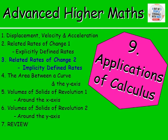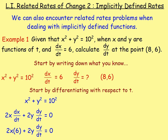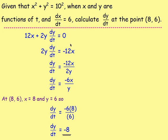We then went on to look at implicitly defined rates. This means the equation won't be y equals something in terms of x — you've got x's and y's on the same side. In that case, you differentiate with respect to t. Write down the information you have, then differentiate: bring the power down, take one off, and because you're differentiating with respect to t, you get dx/dt or dy/dt beside each term. Differentiating a constant like 10 squared just gives zero. Sub in what you know to find the remaining rate. We're given the point (8, 6), so x equals 8 and y equals 6.